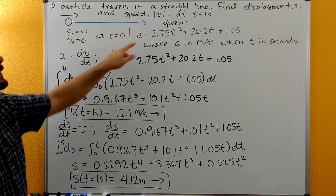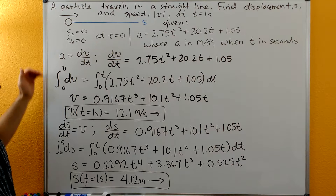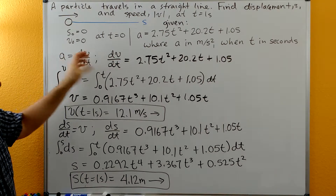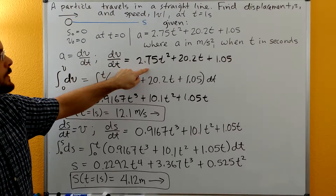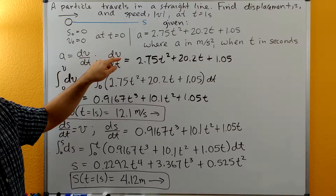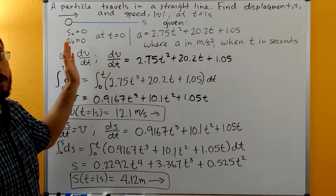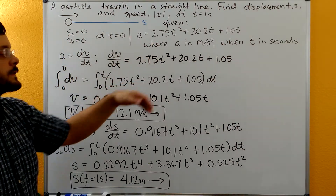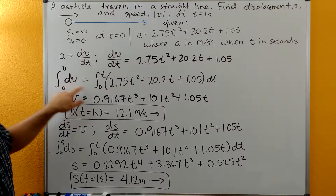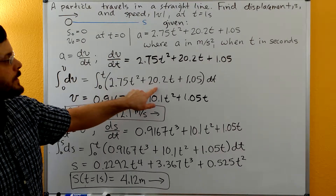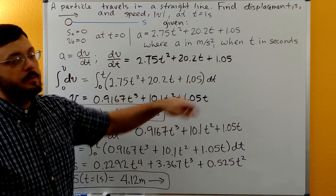Since we were given this function for a and it's non-constant, we have to set up our differential equations and integrate. So we get that a is equal to dv/dt. Switching this around, dv/dt is equal to our a value. We can integrate this, but we need to separate the variables first — v's and functions of v on one side, t's and functions of t on the other side. We do this by multiplying through by dt, giving us dv equal to 2.75t² plus 20.2t plus 1.05, multiplied by dt.